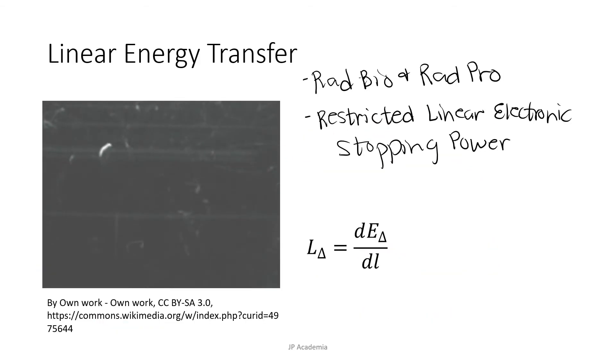Before we proceed, let us define first Linear Energy Transfer. Linear Energy Transfer or LET is the amount of energy that an ionizing particle transfers to the material as it traverses per unit distance. In radiation physics this is also called the restricted linear electronic stopping power.